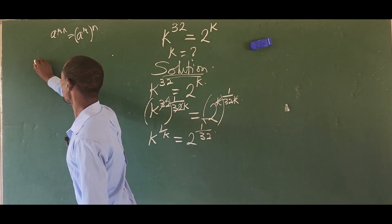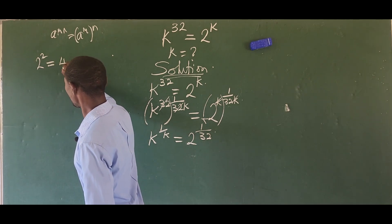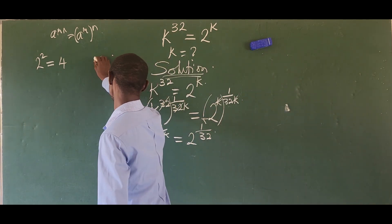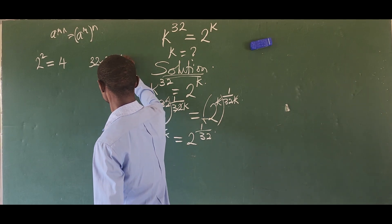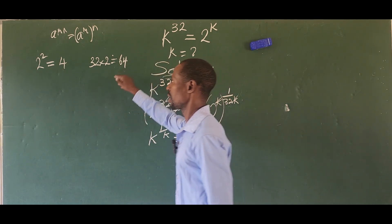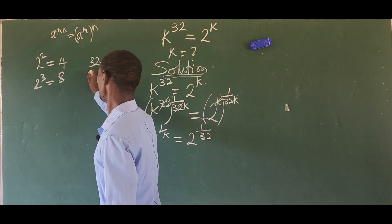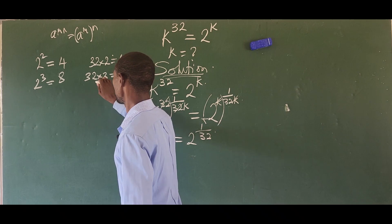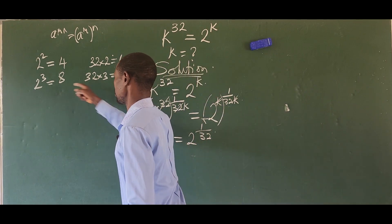Let's start with n equals 2: 2 to the power of 2 is 4, and 32 times 2 is 64. Not the same. Try n equals 3: 2 to the power of 3 is 8, and 32 times 3 is 96. Not the same. Try n equals 4: 2 to the power of 4 is 16, and 32 times 4 is 128. Still not the same.